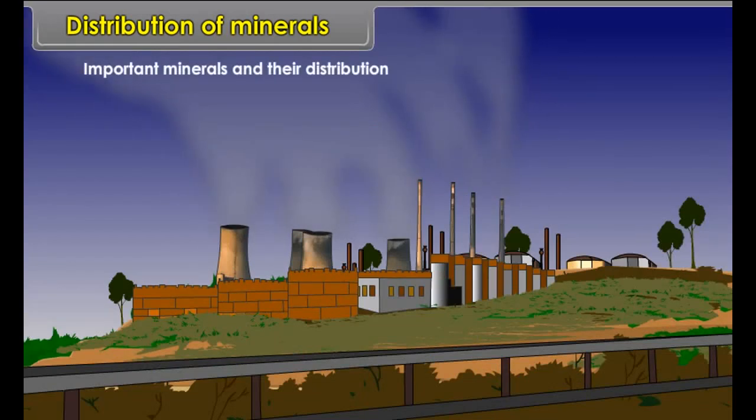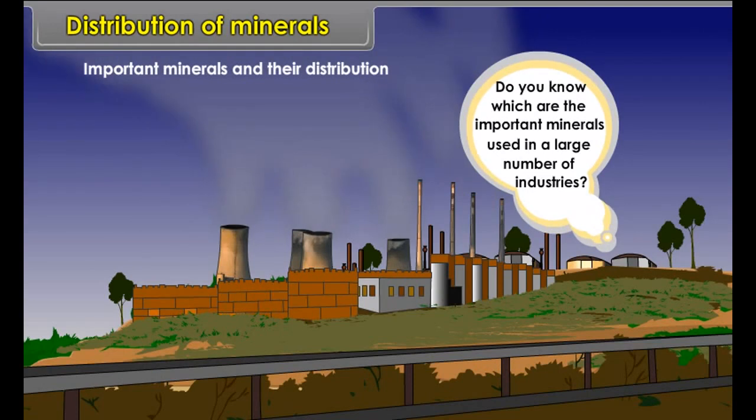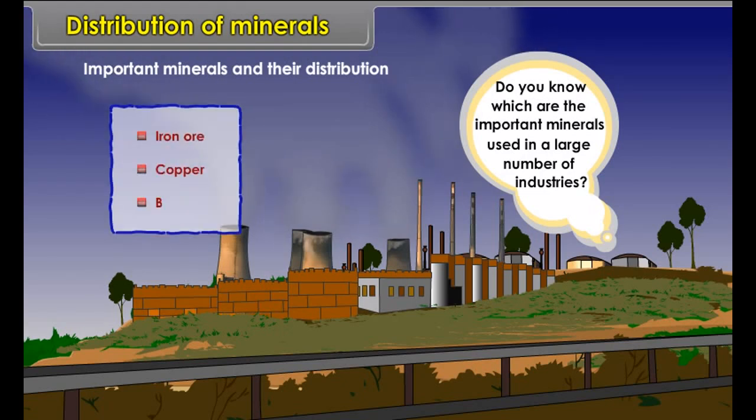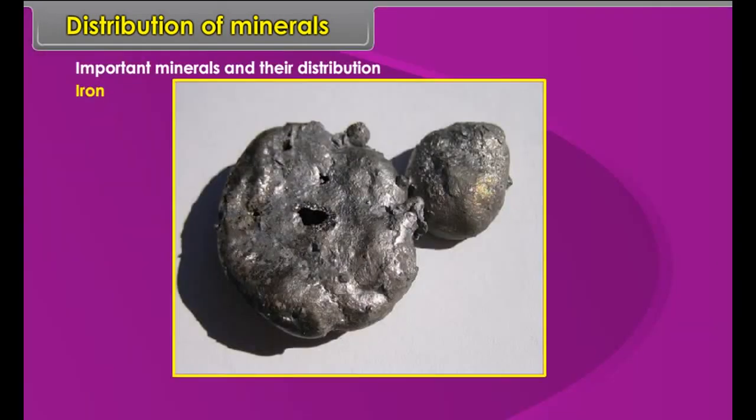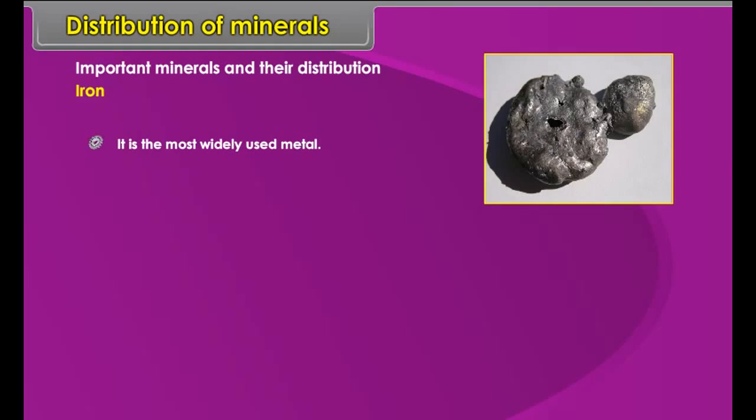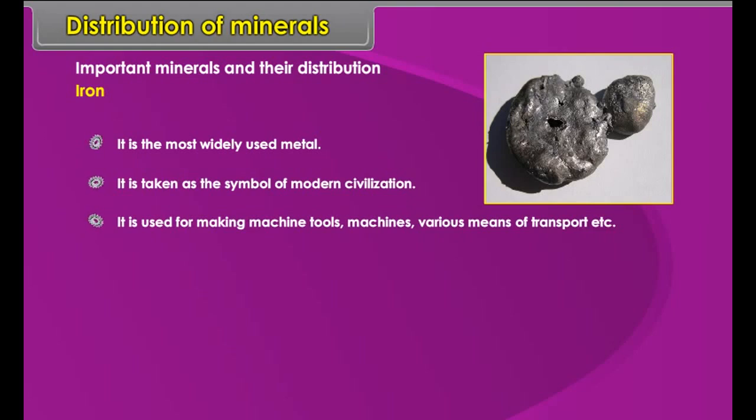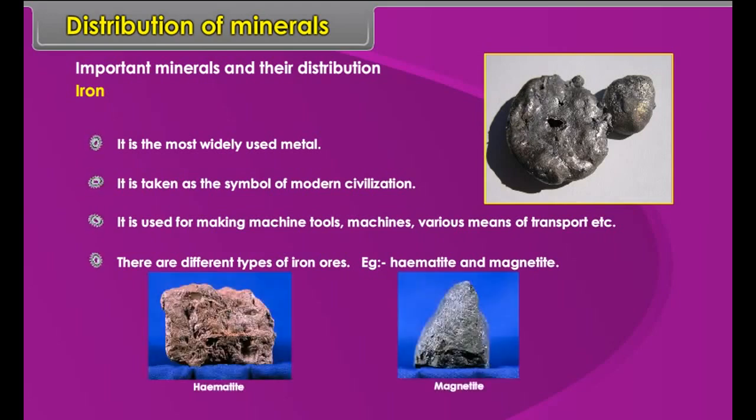Important minerals and their distribution. Do you know which are the important minerals used in a large number of industries? Iron ore, copper and bauxite are used in a large number of industries. Iron is the most widely used metal. It is taken as the symbol of modern civilization. It is used for making machine tools, machines, various means of transport, etc. There are different types of iron ores, for example, hematite and magnetite.